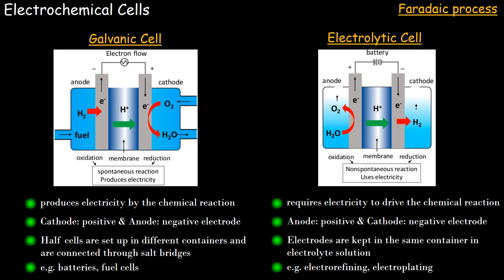Coming to the electrolytic cell — this is the opposite of a galvanic cell. Here, we supply electricity from an external source and carry out some chemical reaction. In this case, anode would be the positive and cathode is the negative electrode. Electrodes are kept in the same container in electrolytic solution, unlike the galvanic cell where we had a porous plug or salt bridge connection with two half cells. A few examples of electrolytic cells are electro-refining cells and electroplating cells. For electroplating, we take a salt of the metal that needs to be coated, supply electricity from external sources, and that carries out the electroplating process.